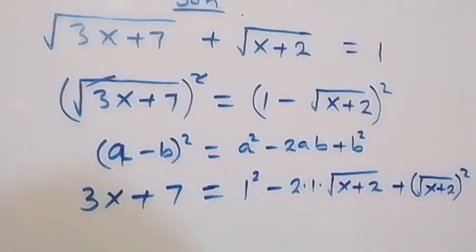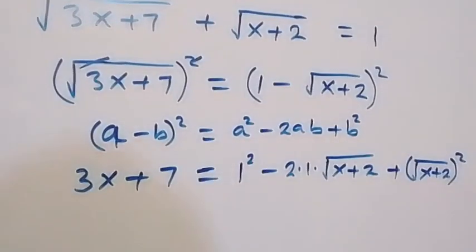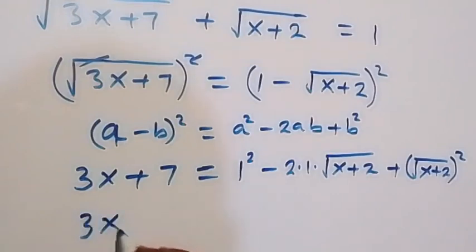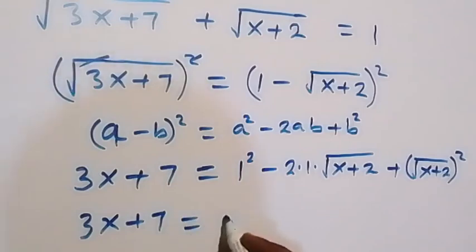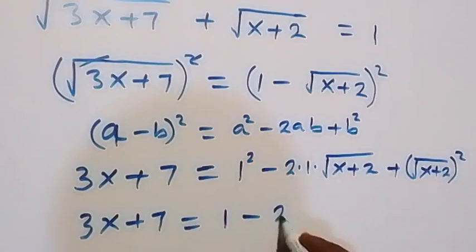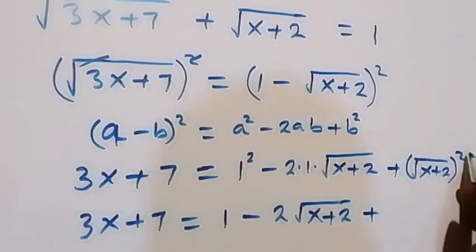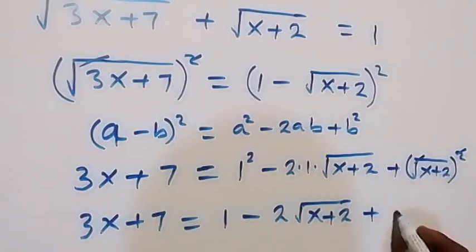When we simplify this further, this gives us 3x plus 7 equals 1, minus 2 times square root of x plus 2, plus x plus 2, since the square cancels the square root on the last term.